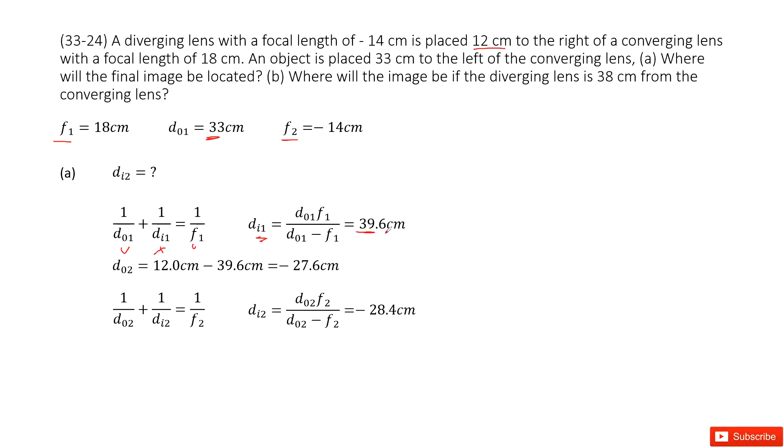39.6 cm for dI1. As you can see, this dI1 is larger than the distance between these two lenses. So we can find dO2, the object distance for the second lens.